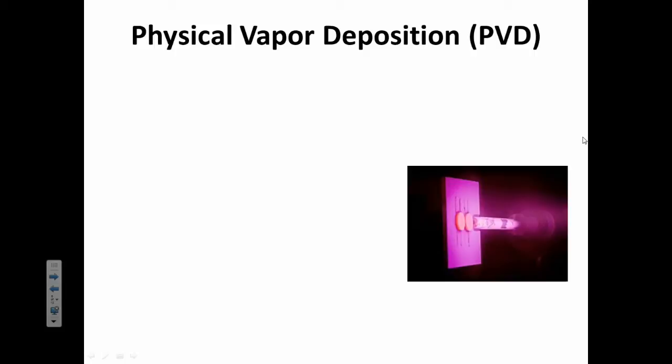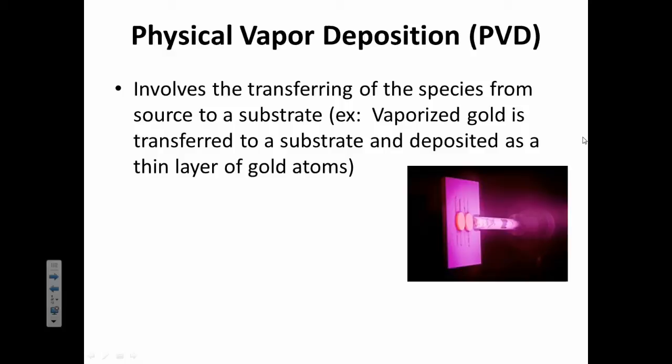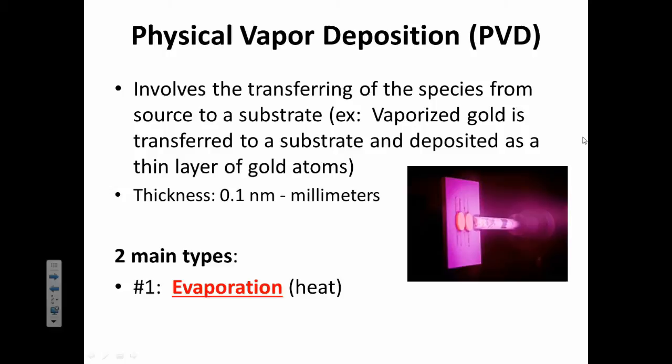So one of the ways that you can make this thin film is by using a technique called physical vapor deposition, or PVD for short. And it involves transferring that species from a source to a substrate. For example, if you have gold, and you heat up that gold so it vaporizes, you can cause it to deposit as a thin layer of gold atoms, maybe between 0.1 nanometers to millimeters thick.